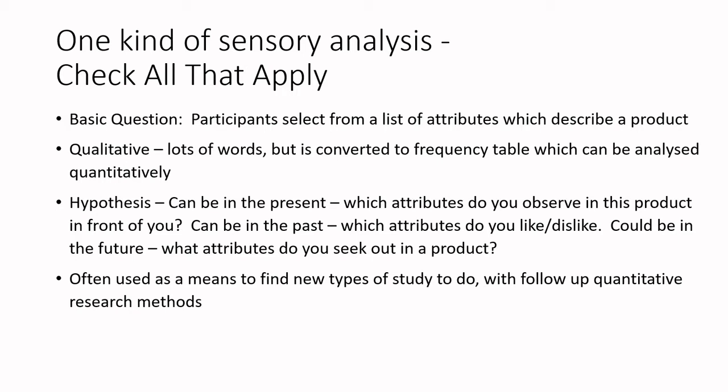You can also use CATA from a forecasting perspective — asking what attributes you would want in a future product. That needs to be linked with prototyping; people say things like 'I want more lemon flavor in my strawberry jam,' which might work or might be disgusting. You need to link it with hedonic testing. Just like many methods, one form of sensory testing leads us to find another type of study, which is why there's constant opportunity in sensory analysis.